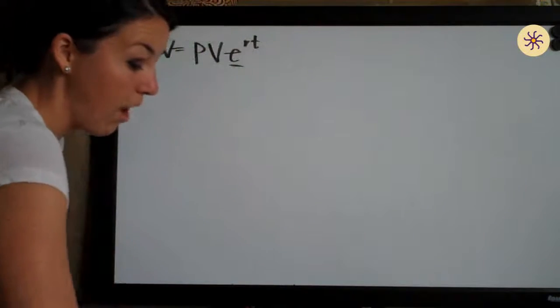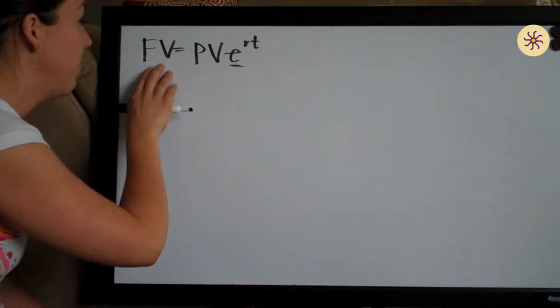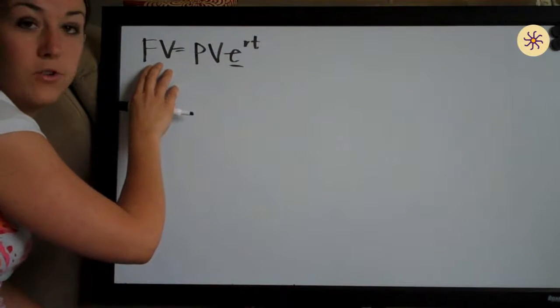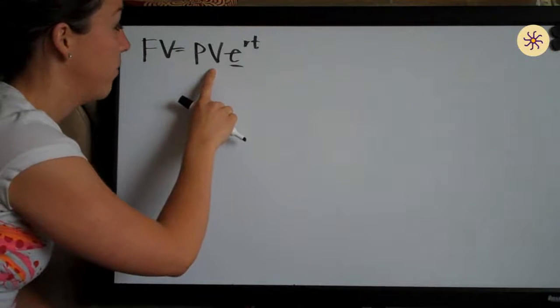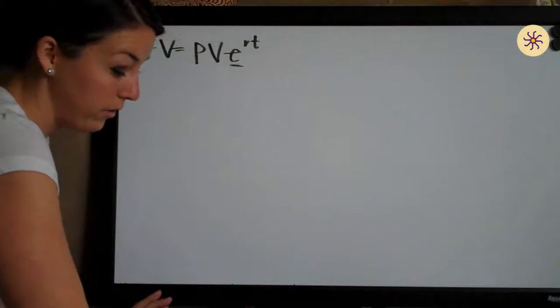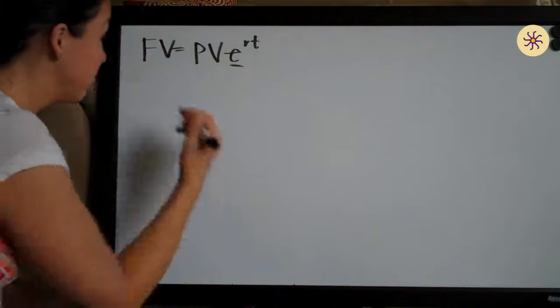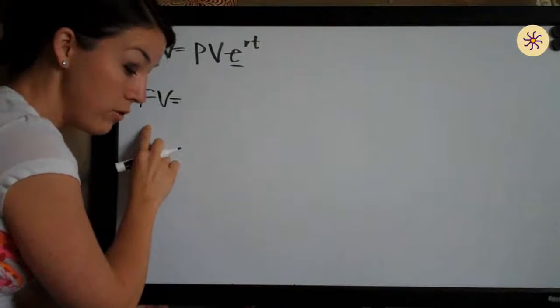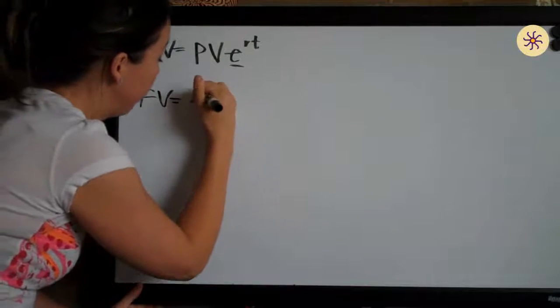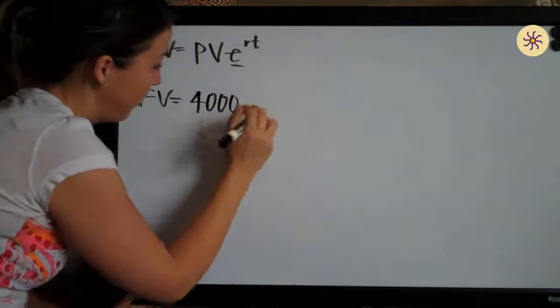It's asking us to find the future value of $4,000, so that means we are solving for future value. That's what we have on the left here by itself, and the present value is $4,000. That's the amount that we have now. So we just go ahead and start plugging values into our formula. We're looking for future value.